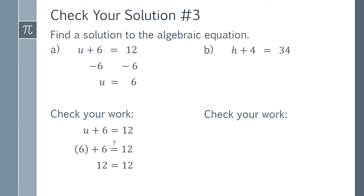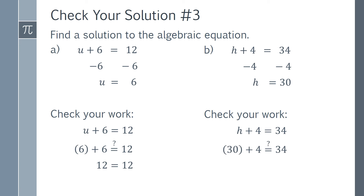Now for Part b. We will use the inverse operation of subtraction and subtract 4 from each side. This leaves us with h equals 30. To check our work, we go back to the original equation, substitute 30 in for h, and we find that 30 plus 4 does equal 34. So once again, our solution is correct.